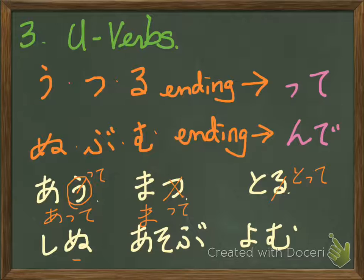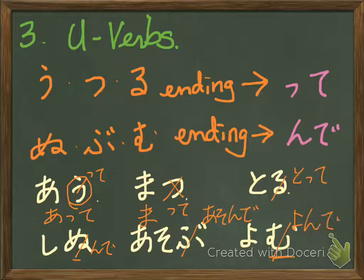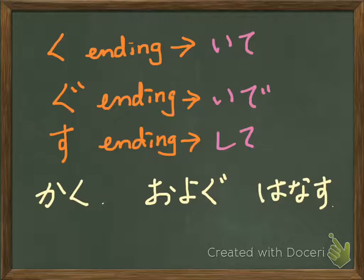Shinu — nu ending — change it to nde, so shinde. For bu ending, change it to nde: asobu → asonde. For mu ending, change it to nde: yomu → yonde. This is the te-form.